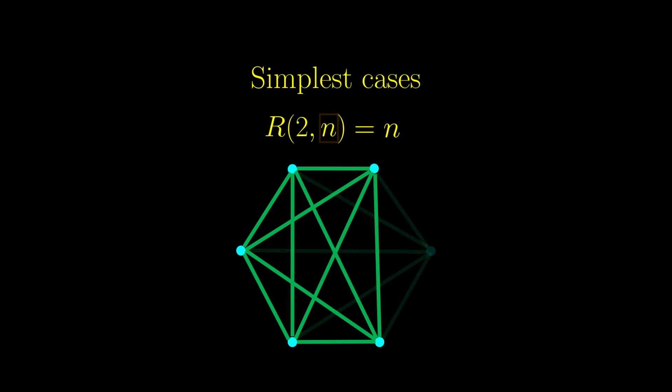If we remove any vertex from this graph, we don't have any red edges, or any n vertices having green edges with each other, because there aren't even enough vertices to begin with. So we are done with this fact.